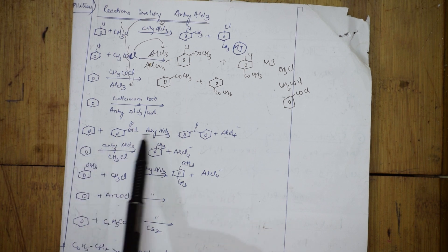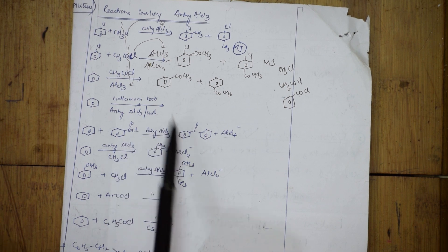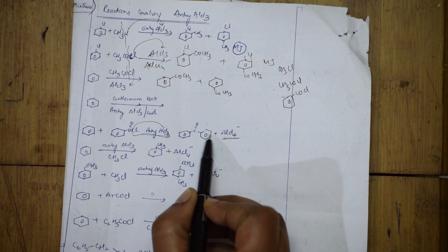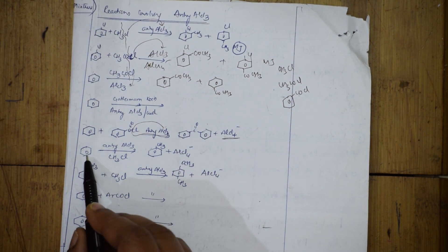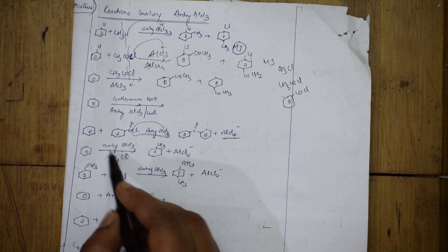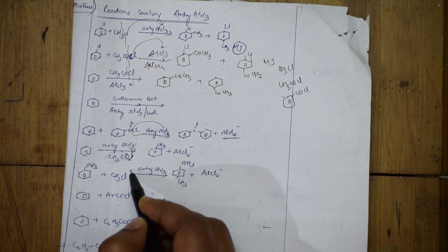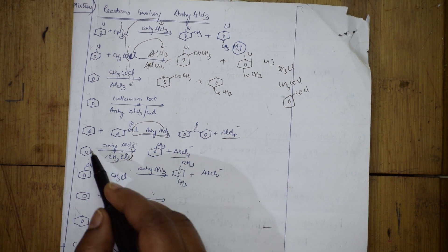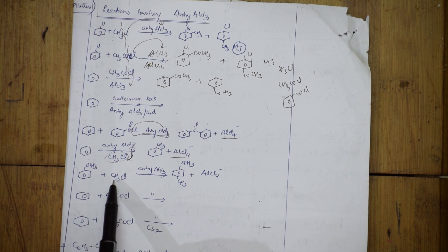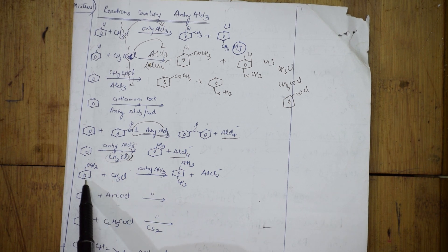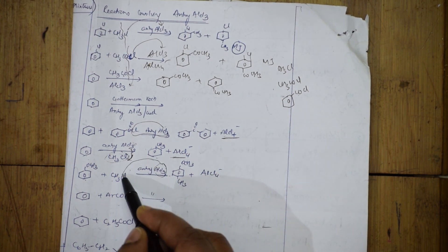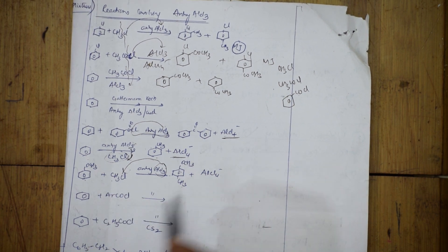With benzene and benzoyl chloride using anhydrous AlCl₃: being a Lewis acid, AlCl₃ picks up the chlorine forming AlCl₄⁻, then the two rings join together. With benzene and methyl chloride under anhydrous AlCl₃ plus a methoxy group — the AlCl₃ picks up Cl⁻ forming AlCl₄⁻, and the groups join.